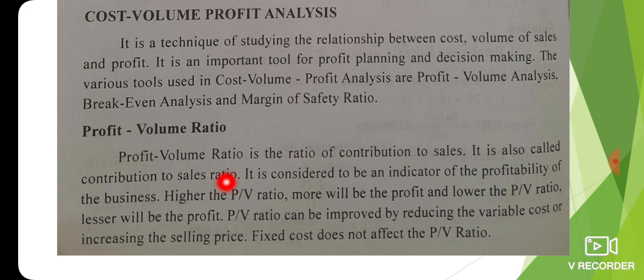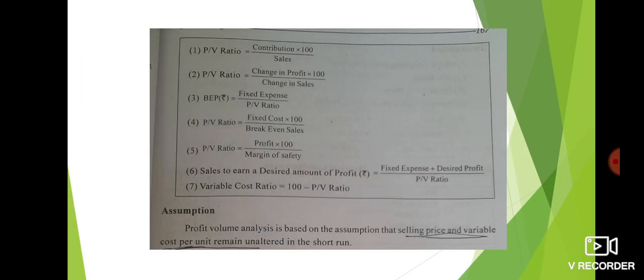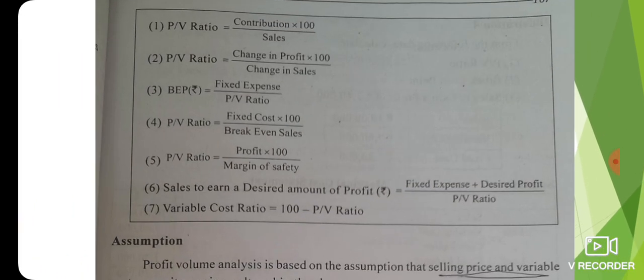The profit-volume ratio is the ratio of contribution to sales. It is also called the contribution-to-sales ratio. Contribution to sales ratio is the PV ratio. This is the formula: PV ratio equals contribution divided by sales, multiplied by 100.